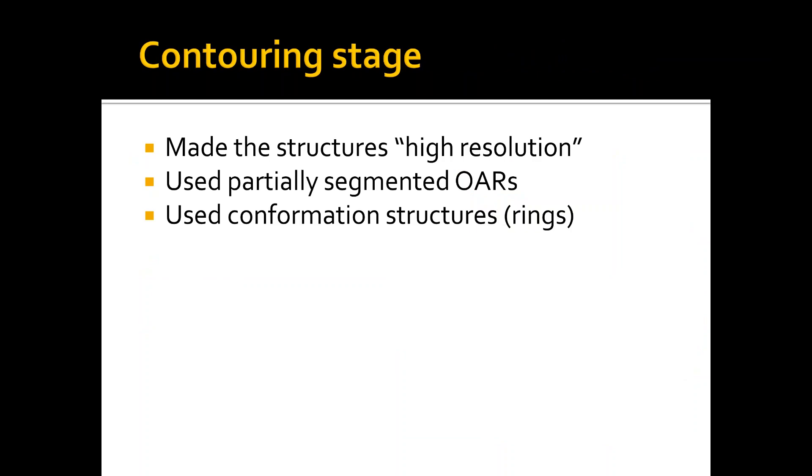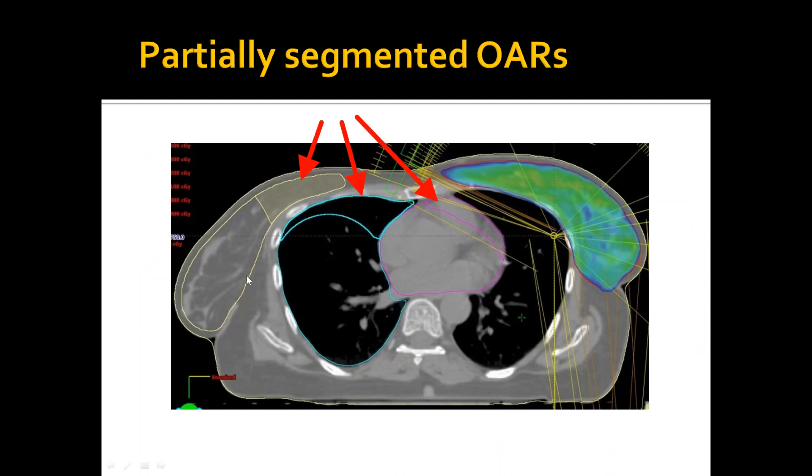In the contouring stage, I made the structure of high resolution. I also used partially segmented organs at risk, and I used conformation structure rings. These are the partially segmented organ at risk. If we see this is the right breast contour, the small contour is the partially segmented organ at risk. I used this structure to push the dose out of this region more in order to stress on the optimizer that I want the dose out of this region. I have made one also for the right lung and for the heart as well, as we can see here.